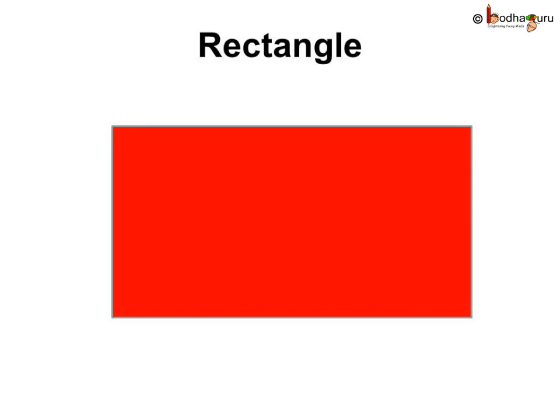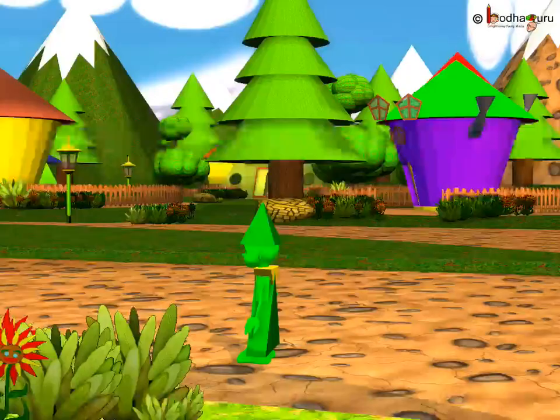Here, each pair of opposite sides have same length. Two are long. And, two are short. This kind of shape is a rectangle.